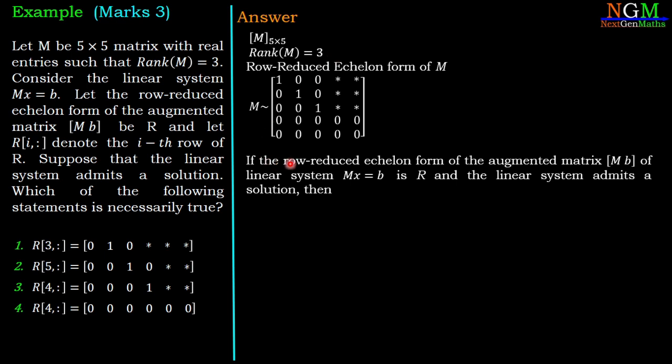Now, if the row-reduced echelon form of augmented matrix [M|b] of system Mx = b is R, and the linear system admits a solution as given in the data, then R represents the augmented matrix and the system admits the solution.